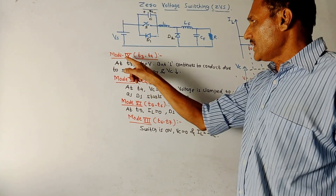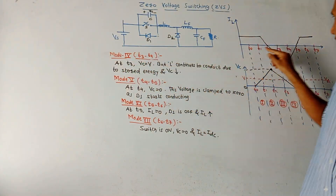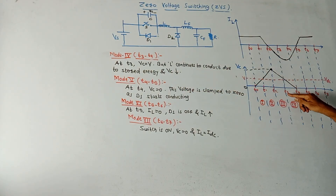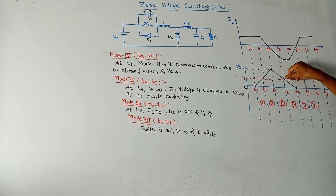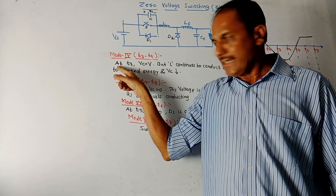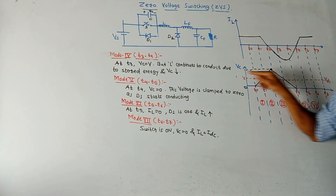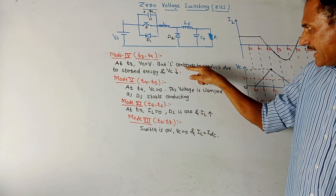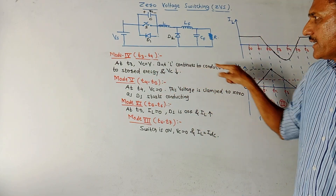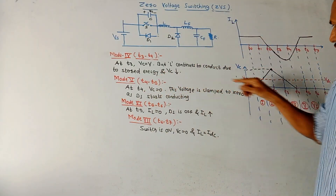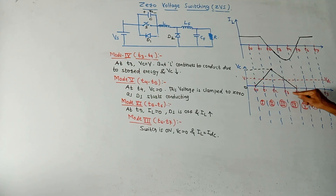Mode 4 is from T3 to T4. At T3, VC equals V, but the inductor continues to conduct due to stored energy. VC starts reducing from T3 to T4, reaching 0 at T4.